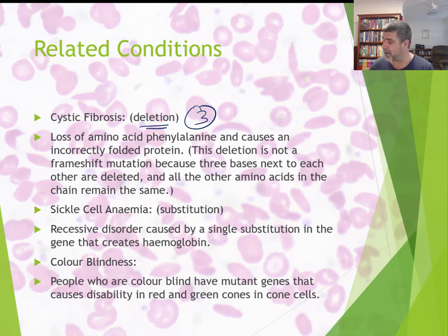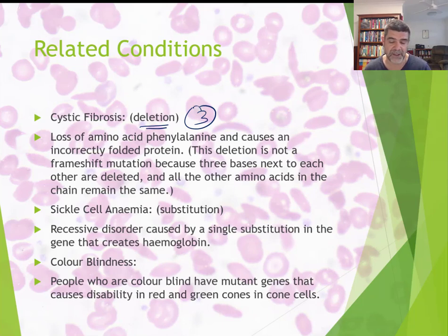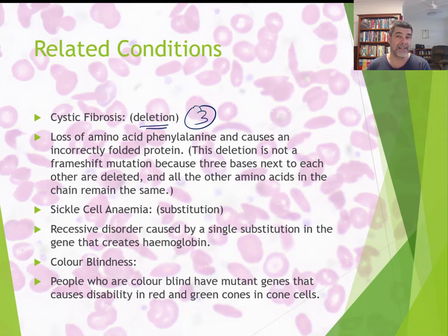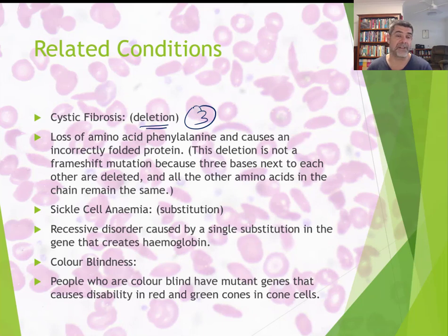Colour blindness is another example worth studying. Looking at these examples in class gives a good idea of the consequences of these types of changes. The key point is that genic mutations only affect a single gene and therefore only the production of a single polypeptide chain. Whether you're substituting one base or adding/deleting a base will affect how much of that amino acid chain is affected. Having these examples ready for your exams is critically important. Thanks for watching.